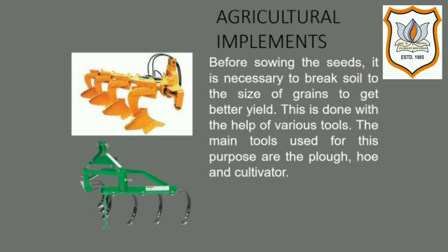Our next topic is Agricultural Implements. Before sowing the seed, it is necessary to loosen and turn the soil in the field to break it into fine grains. This is done with the help of various agricultural implements. The main agricultural implements used for loosening and turning the soil are the plow, hoe, and cultivator.